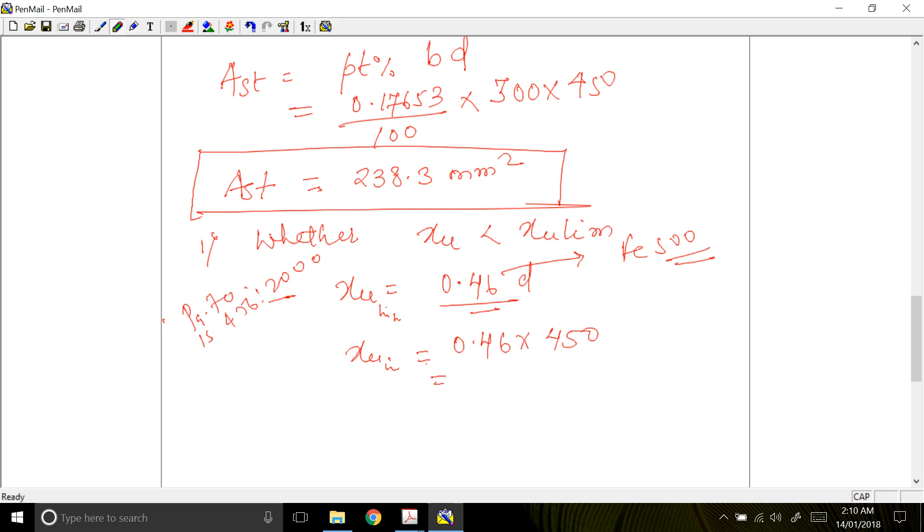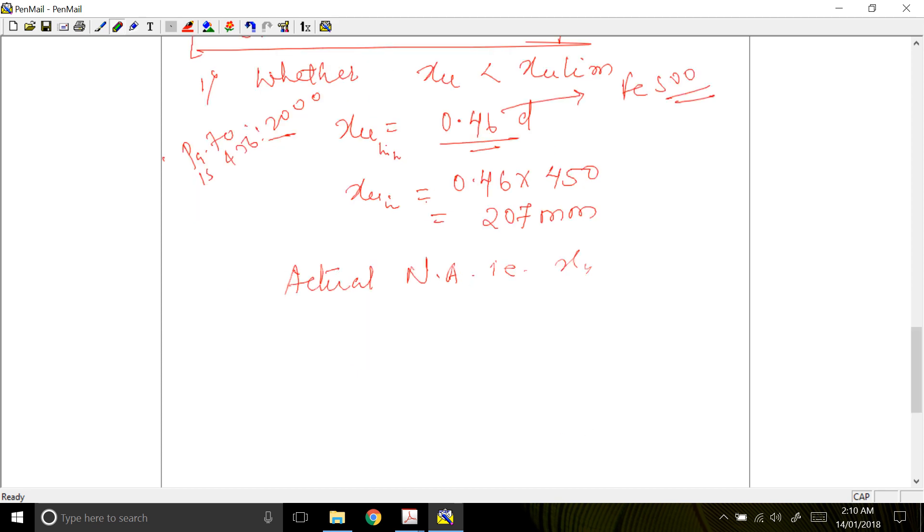Now we will calculate actual neutral axis, that is XU. We have a formula for XU. XU is equal to 0.87 Fy AST divided by 0.36 FCK B. XU is equal to 0.87 times 500 times 238.3, then we have FCK is 25 MPa and B is 300.